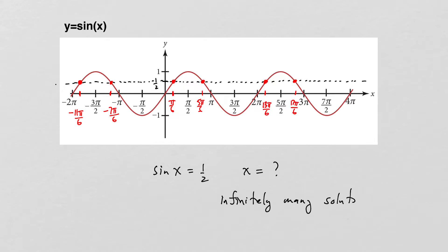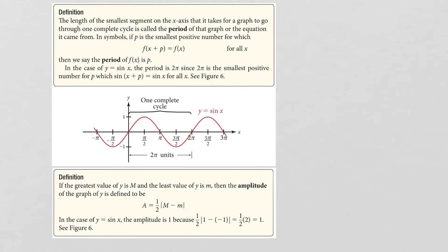We'll talk more about how to describe those kinds of solutions later. Now let's define what we mean by the period of a function. The length of the smallest segment on the x-axis that it takes for a graph to go through one complete cycle is called the period. In symbols, if p is the smallest positive number for which f(x + p) = f(x) for all x, then p is the period.